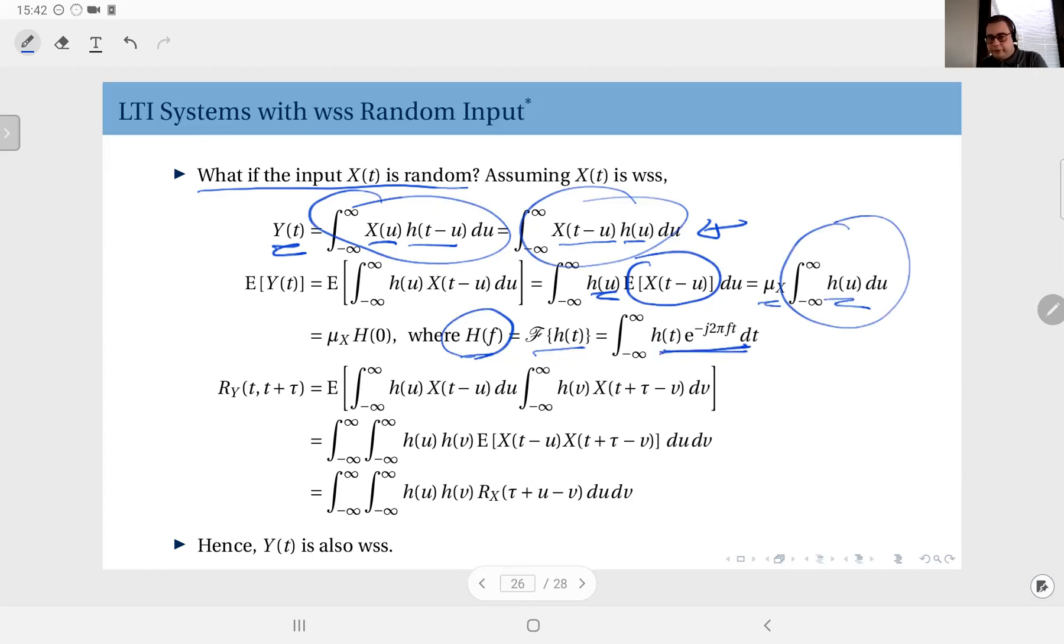Now that is essentially the Fourier transform of h(t), therefore this integral is, as you see, this integral evaluated at f equals zero. So essentially the expected value of y(t) is equal to the mean of x multiplied by the Fourier transform of the impulse response evaluated at zero frequency.